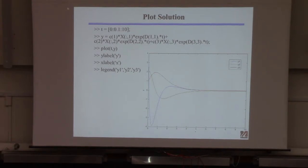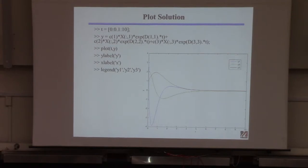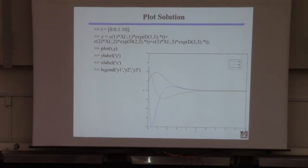If you issue the plot command with labels and legend, you get responses: the blue one is y1, the green one is y2, and the red one is y3. They all start at the correct initial conditions and then go to zero — because for a homogeneous equation dy/dt = A·y with A full rank, all components of y go to zero as t gets large.